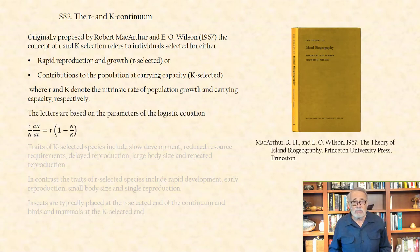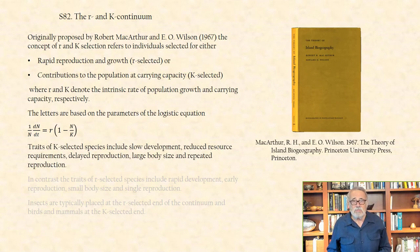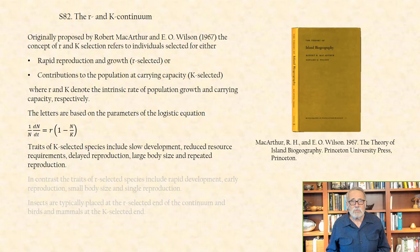The letters are based on the parameters of the logistic equation given here. Traits of K selected species include slow development, reduced resource requirements, delayed reproduction, large body size, and repeated reproduction.